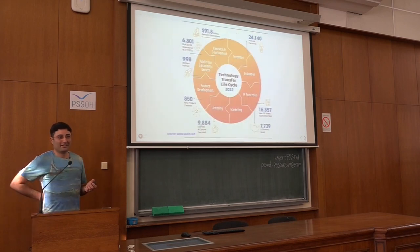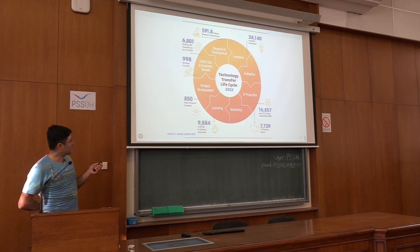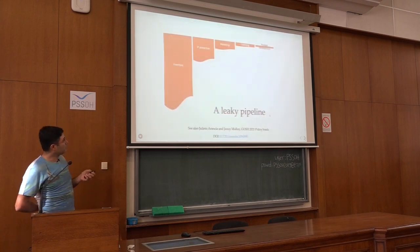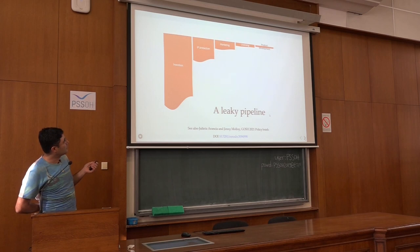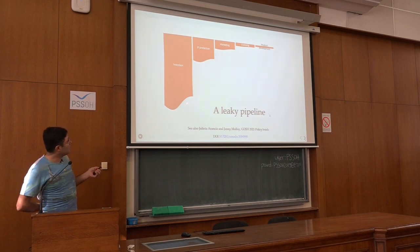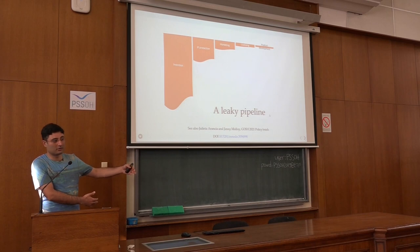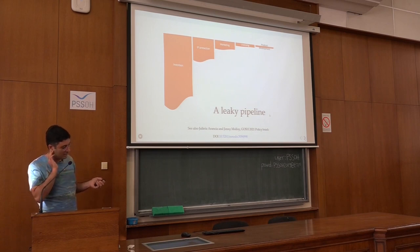If you use the ratios of the numbers, you get about 3% — so 3% of the ideas eventually turn into products or startups. If you plot it faithfully, this is a leaky pipeline: a lot of inventions, some get IP protection, some are marketed, fewer are licensed, and only very few make it. The real number is probably closer to 1%, and this is already only about ideas that became an invention disclosure — many ideas at universities never even get that far. So it's a very generous representation of reality.